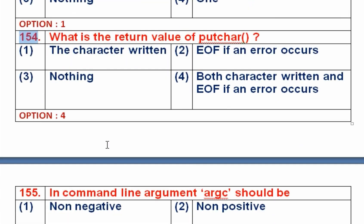Question number 154: What is the return type of putchar? Option 1 is the character written, option 2 is end of file if an error occurs, option 3 is nothing, option 4 is both the character written or end of file if an error occurs. When putchar executes successfully, it returns the character it has written to stdout. If an error occurs, it returns end of file. So it returns either the character written or end of file based on the status of the function. Option 4 is the right answer.